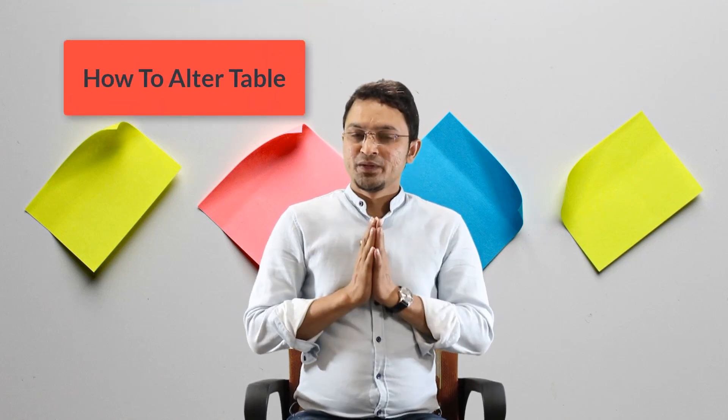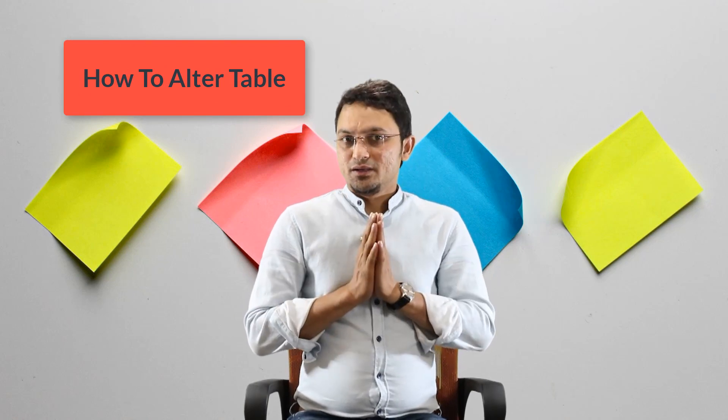In this session we are going to cover the ALTER statement. ALTER means if you want to change any definition of a table or any object, you use the ALTER operation. For example, if you want to change the column name, the data type, modify a column, remove a column, or add a column, then we use the ALTER statement.